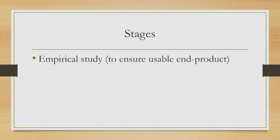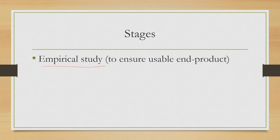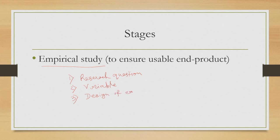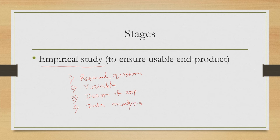Finally, we talked about empirical study, where our objective is to test the usability of the product. There are four stages: stage one is research question formulation, stage two is variable identification, stage three is design of experiment, and stage four is data analysis. At the end of data analysis, we conclude about the usability of the product. None of the stages can be done in an ad hoc manner — each requires careful consideration.